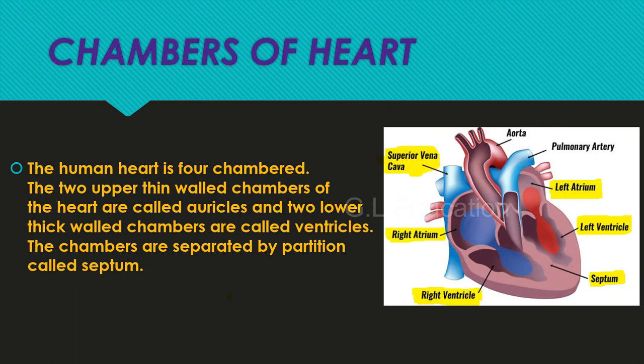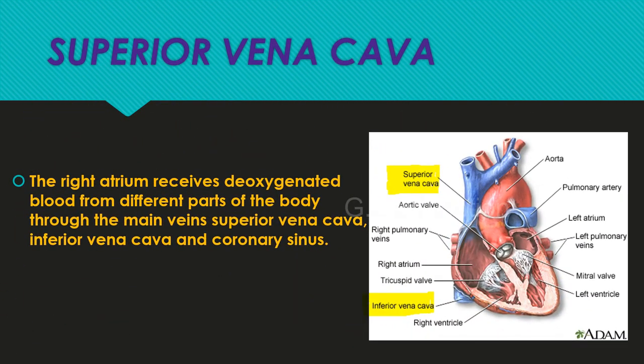Chambers of the heart: the human heart is four-chambered. The two upper thin-walled chambers are called auricles, and the two lower thick-walled chambers are called ventricles. The chambers are separated by a partition called the septum.